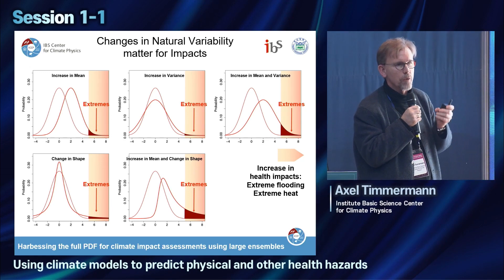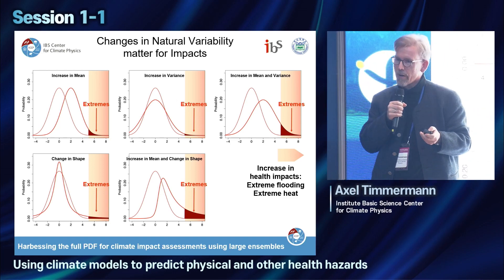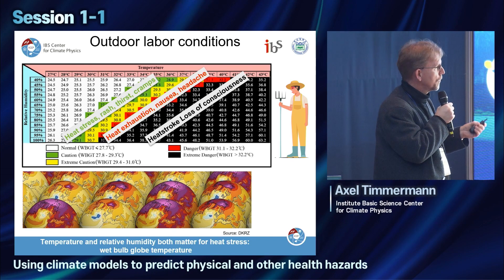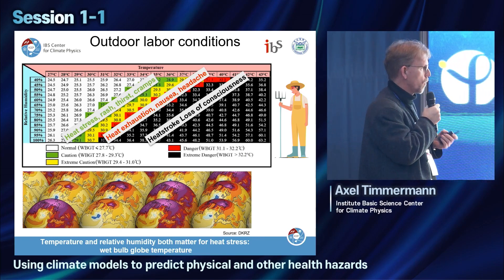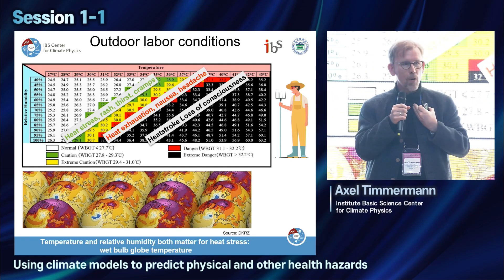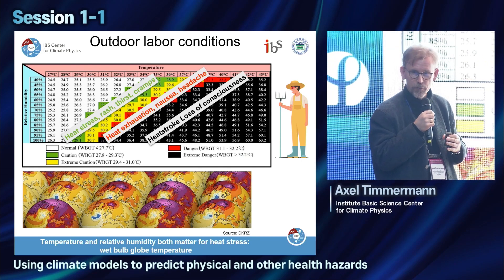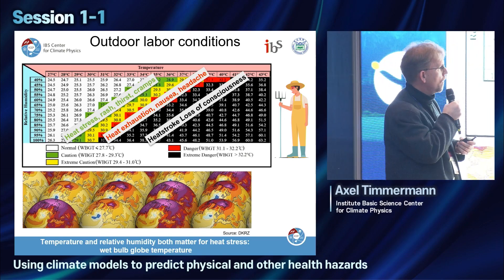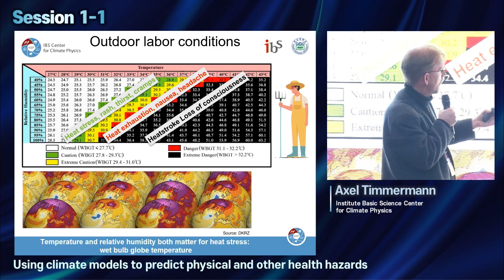To capture the statistics of rare events, we need to run a lot of simulations, which requires even faster supercomputers. We focused here on outdoor labor conditions and what is known as the wet bulb globe temperature — an indication of temperature and relative humidity posing stress on the body when working outside. Temperature alone is not the driver for heat exhaustion; high relative humidity is also really important, because it means you can't sweat as much and your body can't regulate temperature.